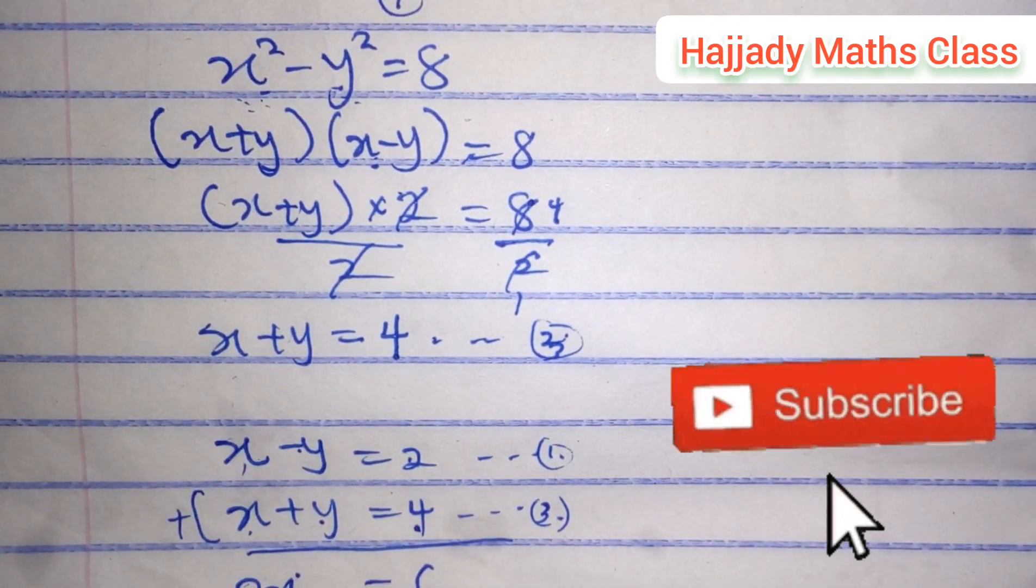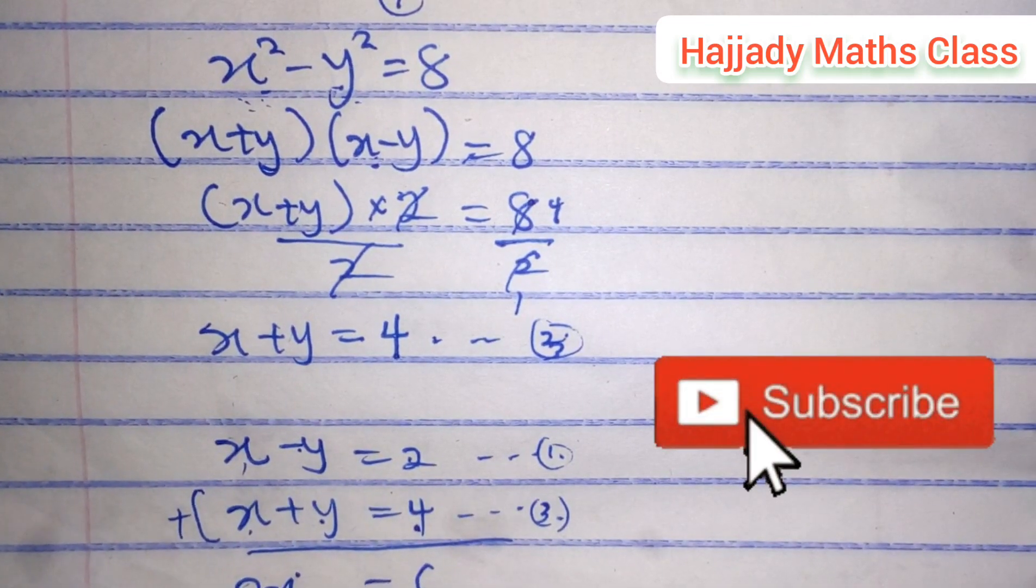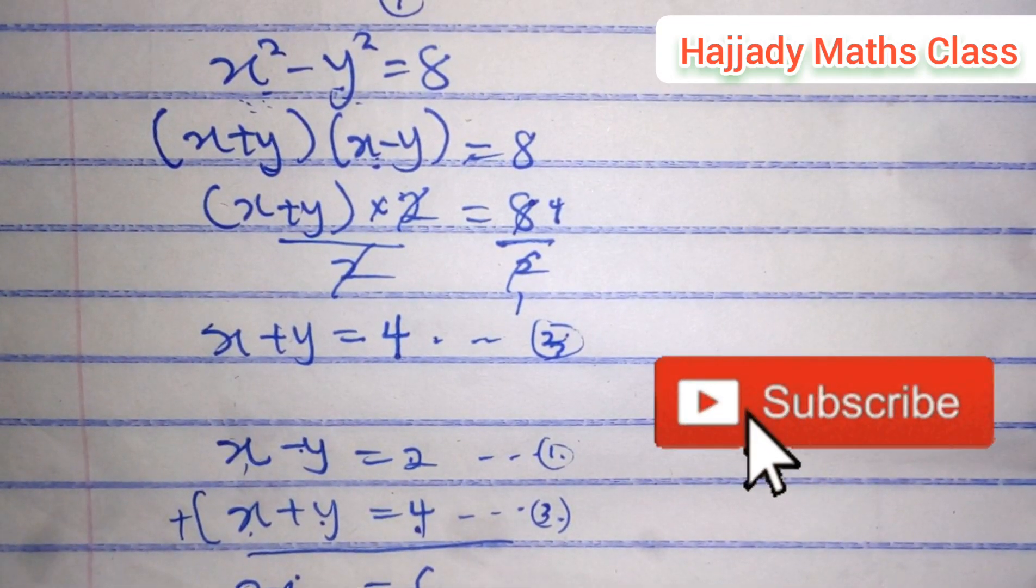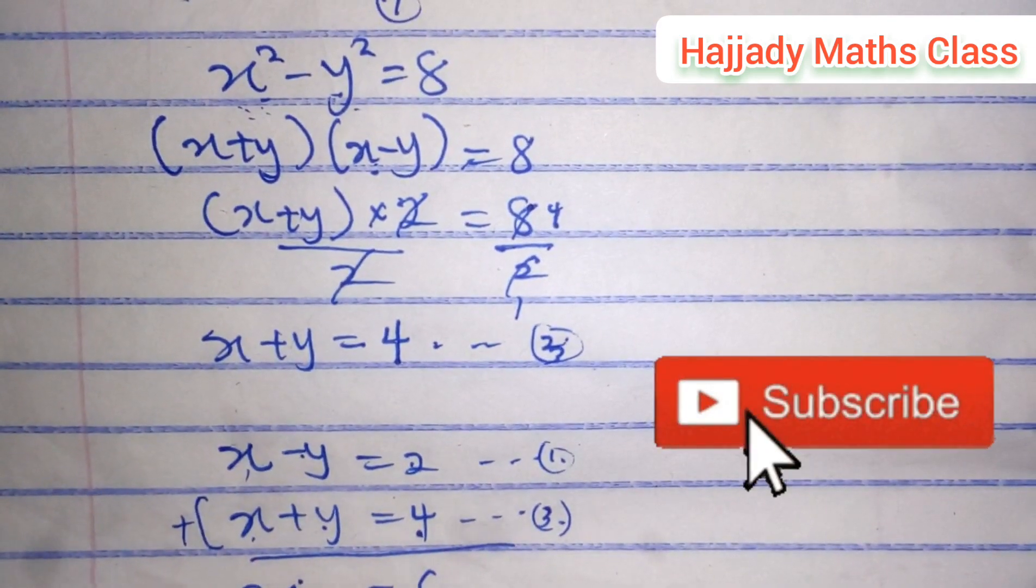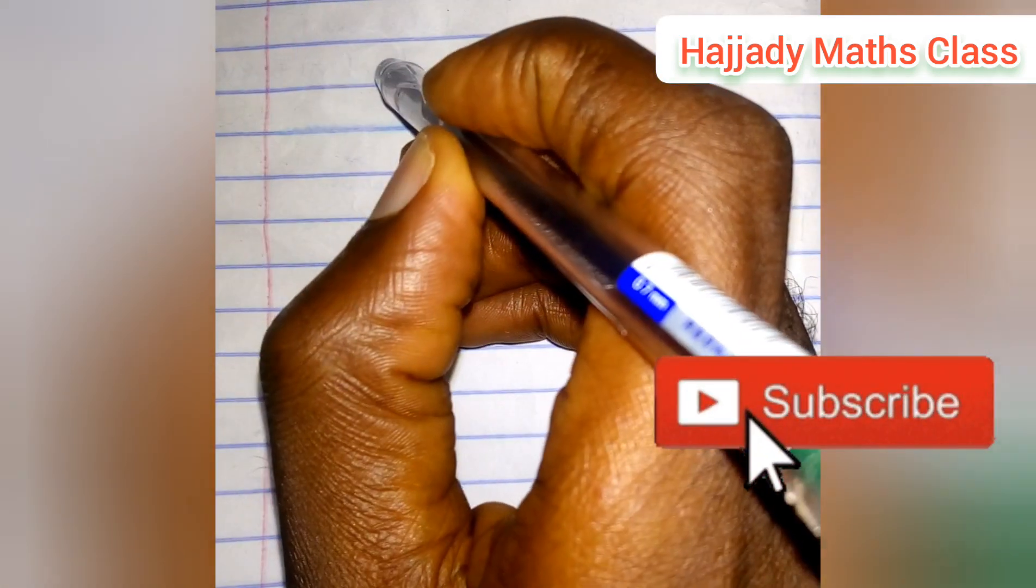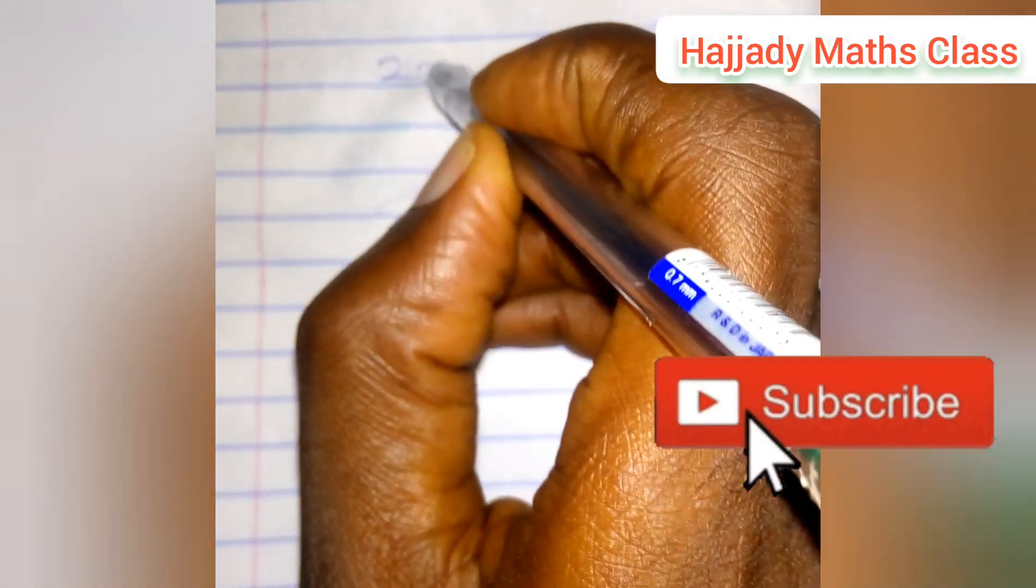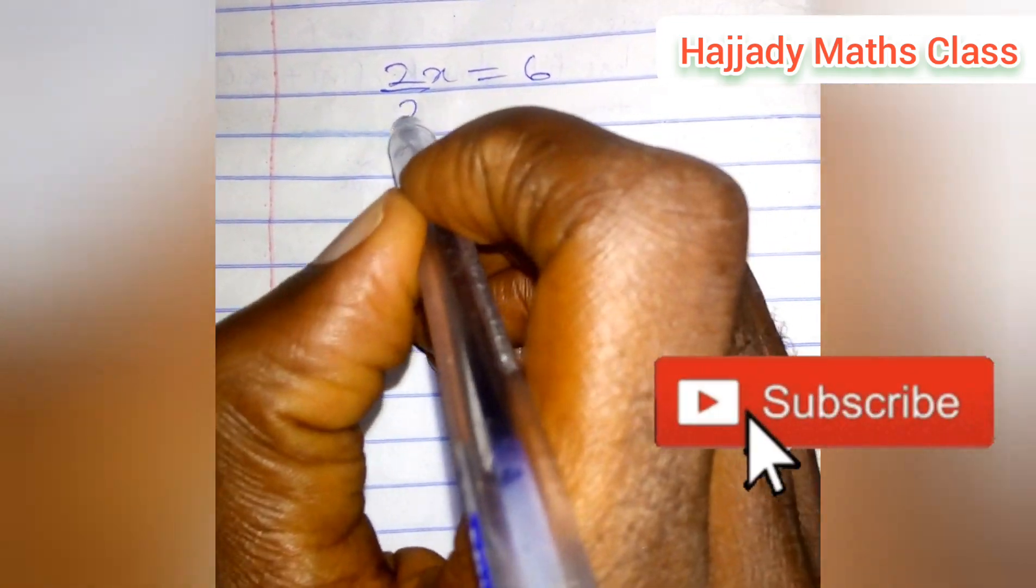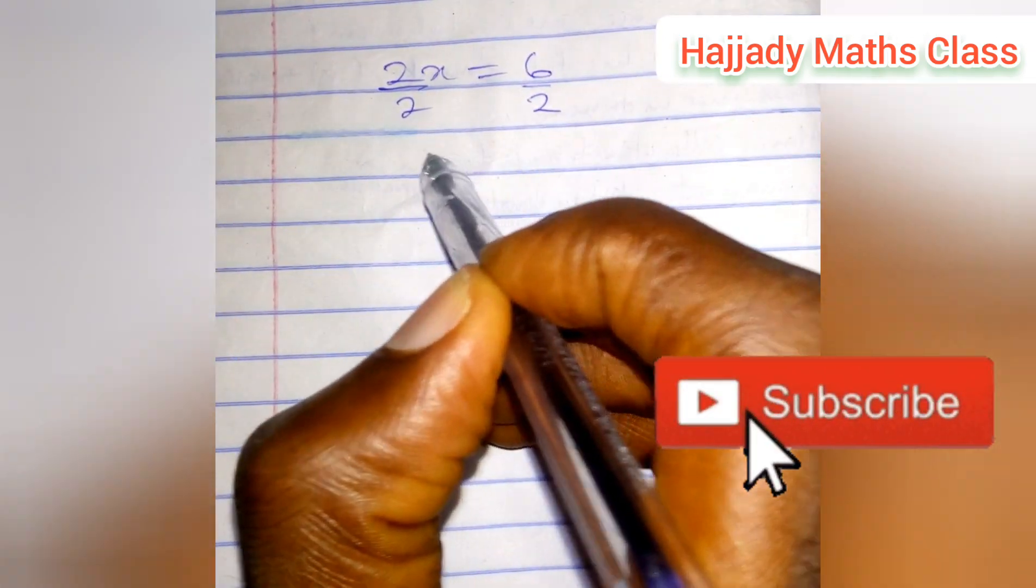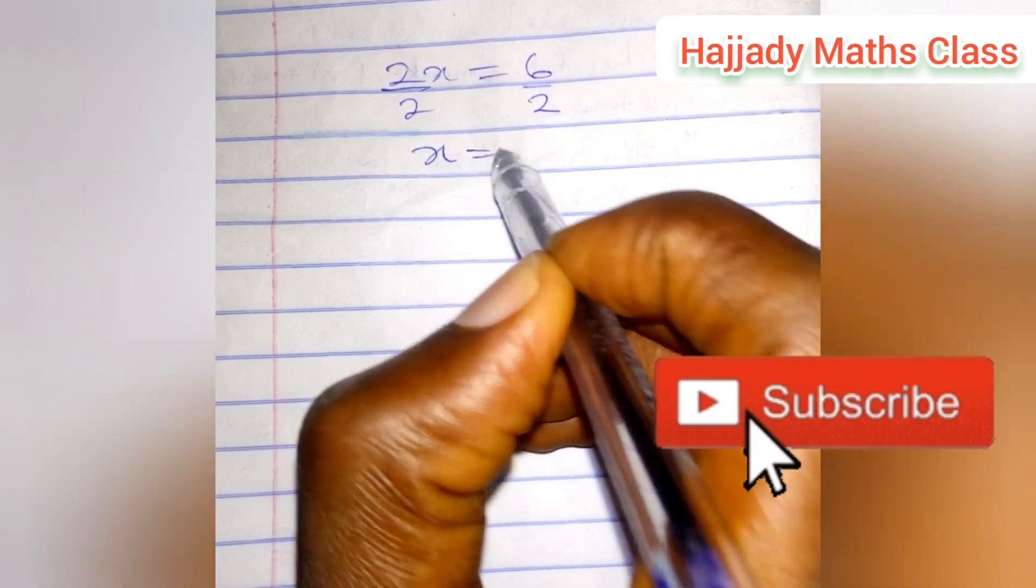And the next thing for us to do is to divide by the coefficient of x, which is 2. Dividing both sides by 2, finally our x equals 3.